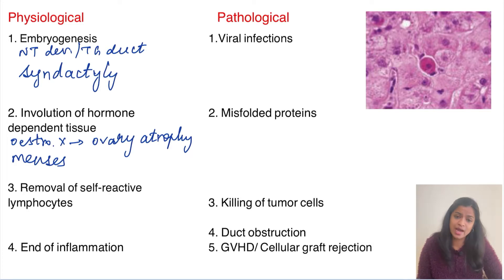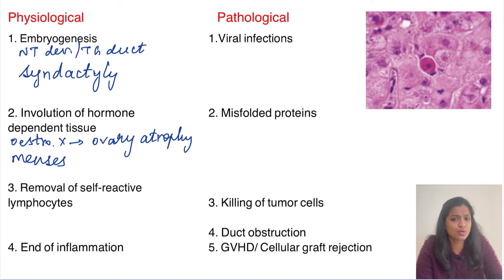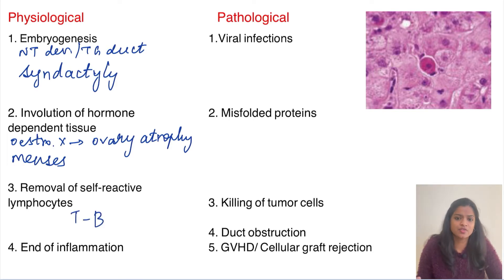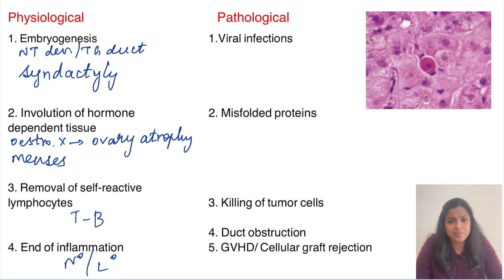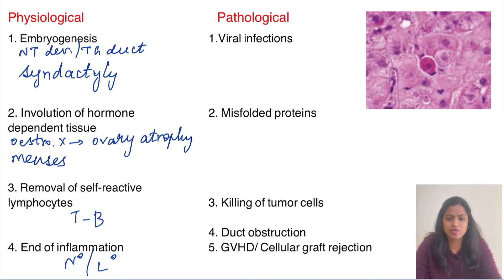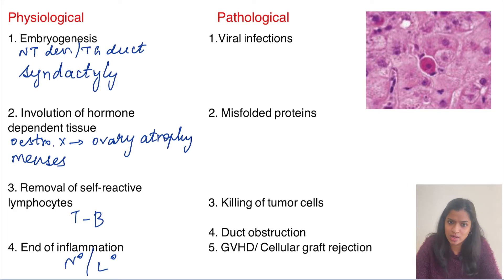The next physiological example is removal of self-reactive lymphocytes. During maturation, both B cells and T cells are tested; those that react against self-antigens must be destroyed by apoptosis. Additionally, at the end of inflammation, neutrophils and lymphocytes must die to stop the inflammatory process — this also happens by apoptosis.